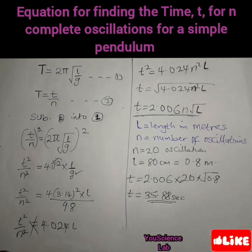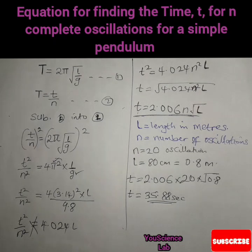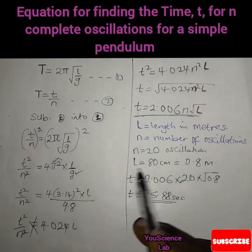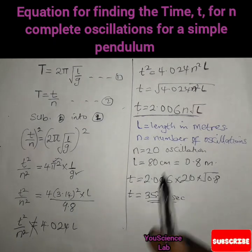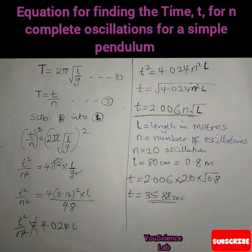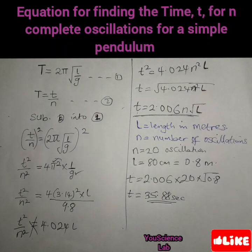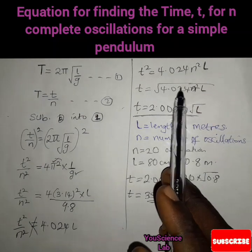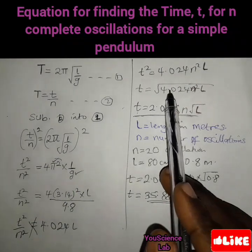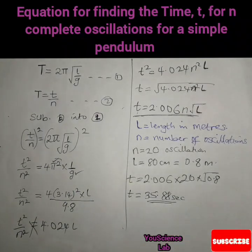So the time taken to complete 20 oscillations when the length of the pendulum is 80 cm is 35.88 seconds. We have an approximate value because we approximated some values during the derivation.